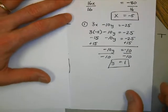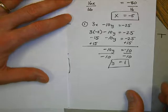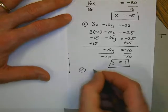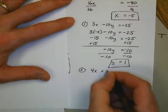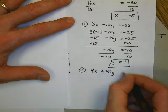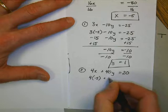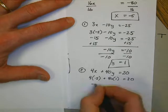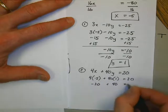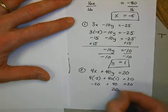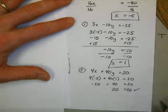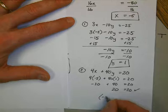I have to check this problem by putting both values back into the other equation to check. The second equation was 4x plus 40y equals 20. Let's see if this checks. x is equal to negative 5, y is equal to 1. So negative 20 plus 40 equals 20. Is that true? It sure is.